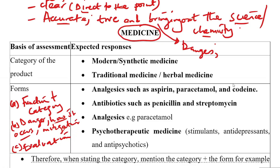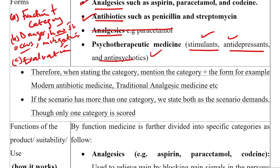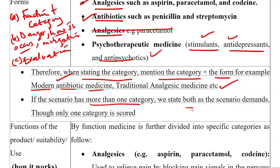There are two categories: modern or synthetic, and traditional or herbal medicine. There are five forms: analgesics, antibiotics, stimulants, depressants, and antipsychotics. When stating the category, it must contain both the form and the category itself — for example, 'modern antibiotic medicine.' If the scenario has more than one category, state both. Don't state two categories if only one is in the scenario. The evaluation part is only done when there are two categories — modern and traditional medicine.